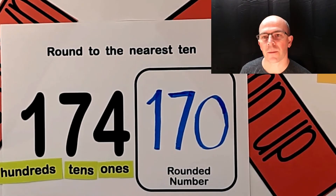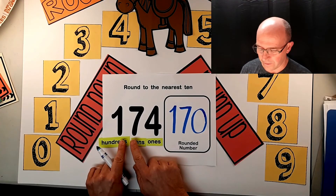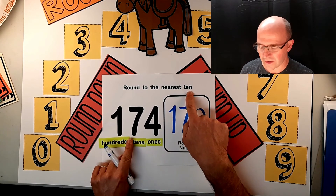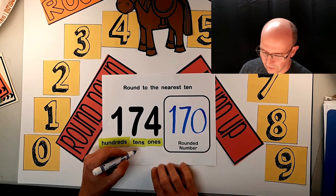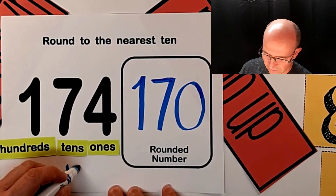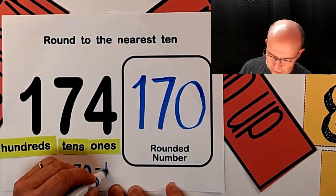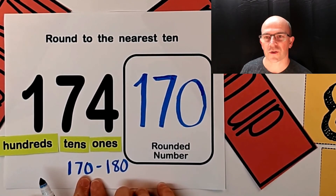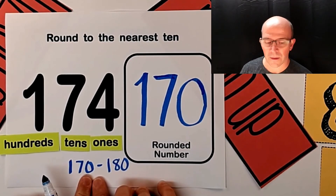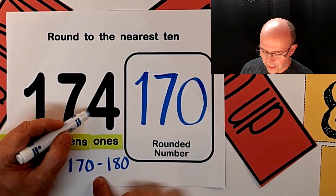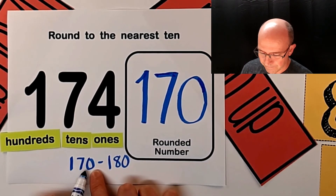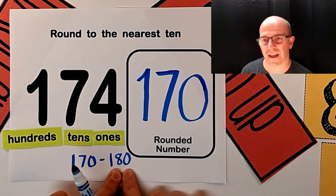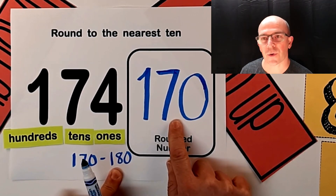Now, if I wanted to check on a number line, I would be asking myself: the number 174, rounded to the nearest 10, falls somewhere between 170 and 180. Which would it be closer to? We know from a number line that a four — 74 would be closer to 70 than it would be to 80. And we've rounded down correctly.